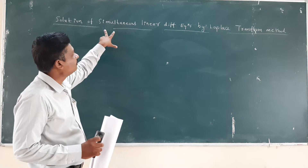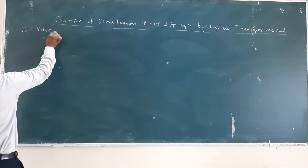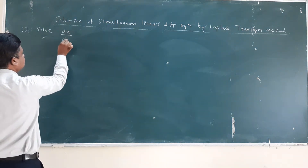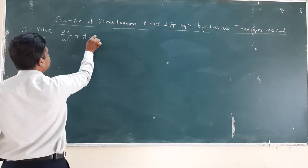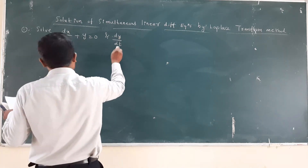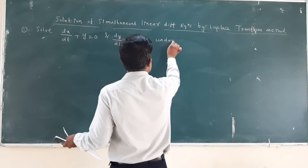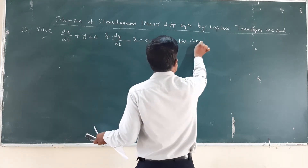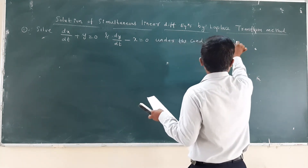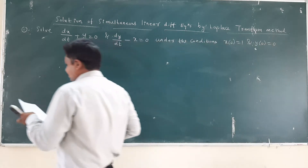But in this video, the equations are 2. So I will take one example. The equations are: dx/dt + y = 0 and dy/dt - x = 0, under the condition x(0) = 1 and y(0) = 0.